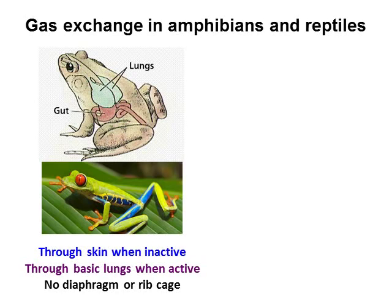Amphibians, like the red-eyed tree frog, live on land and also in water and have different ways of exchanging gases. When they are inactive, usually on land, they exchange gases through the skin. When they're active, they also use lungs. However, they don't have a diaphragm or ribcage, so they're not bony like us — frogs exchange gases by gulping air into their lungs.